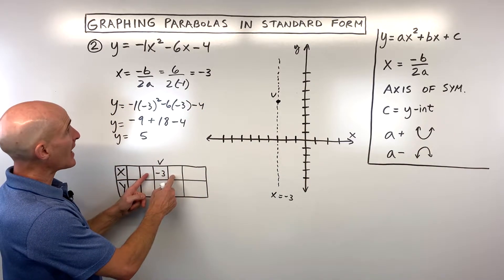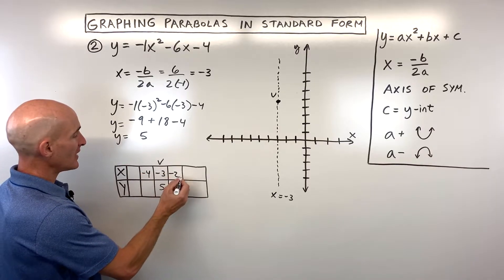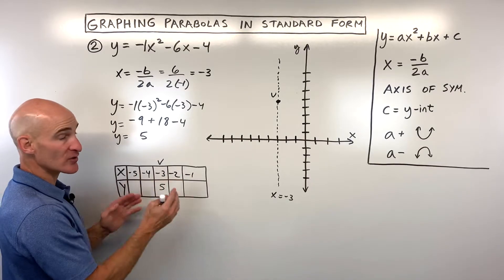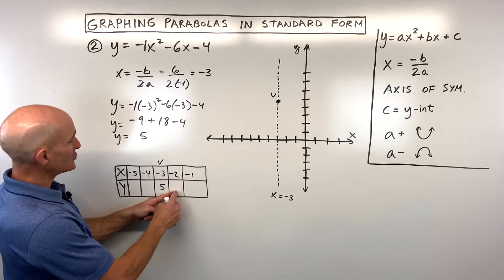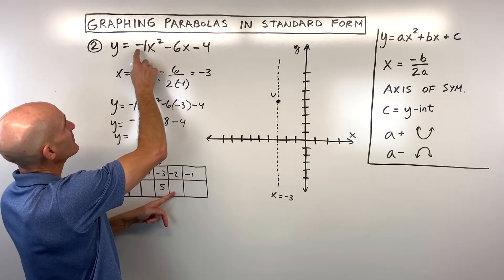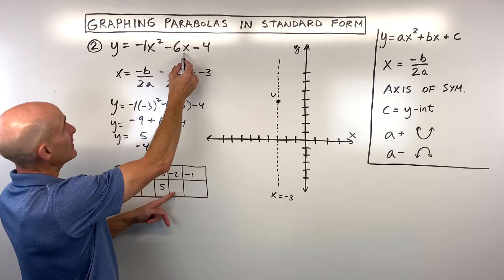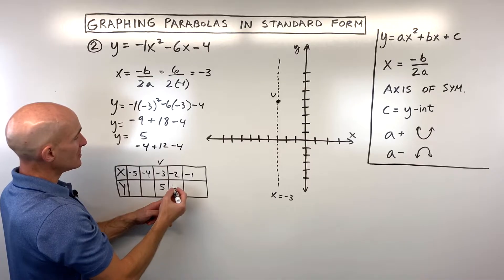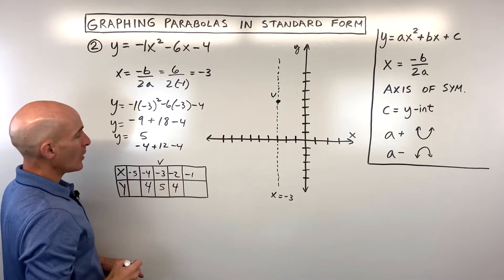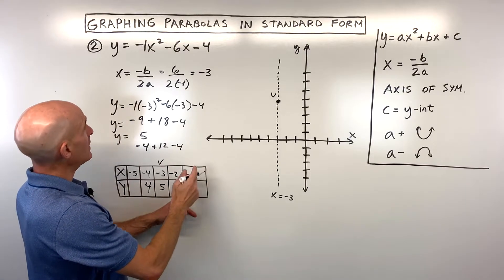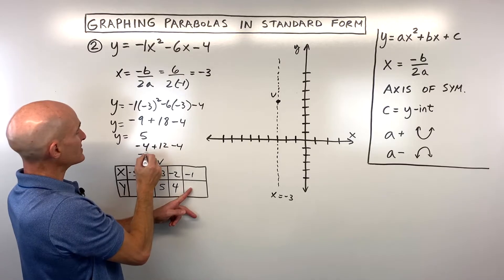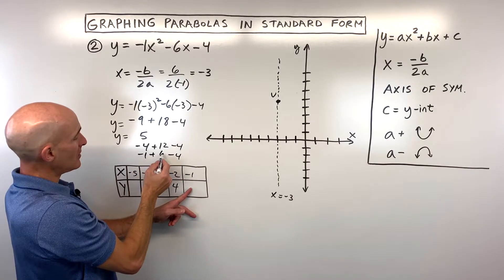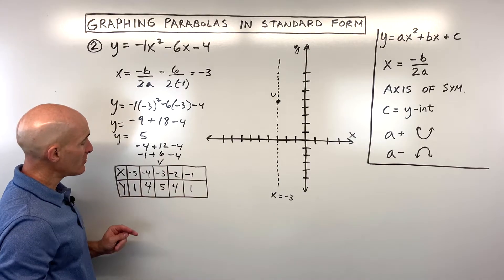Picking points on either side: negative 4 and negative 2, then negative 5 and negative 1 — adding or subtracting 1 and 2 from the vertex x-coordinate so it's symmetric. Plugging in negative 2: negative 2 squared is 4, times negative 1 is negative 4, minus 6 times negative 2 gives positive 12. So negative 4 plus 12 minus 4 gives 4. Plugging in negative 1: negative 1 squared is 1, times negative 1 is negative 1. Negative 6 times negative 1 is 6. So negative 1 plus 6 minus 4 gives 1. Both symmetric points share the same y values.